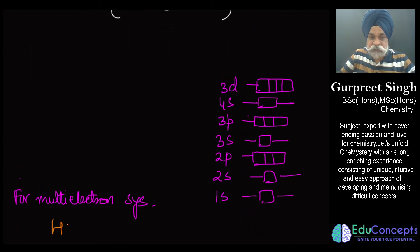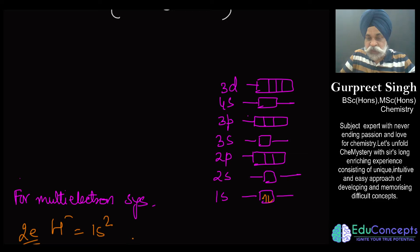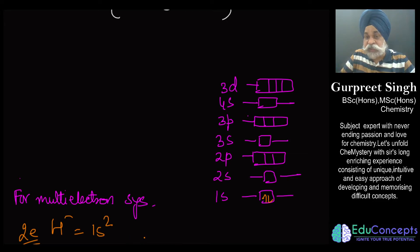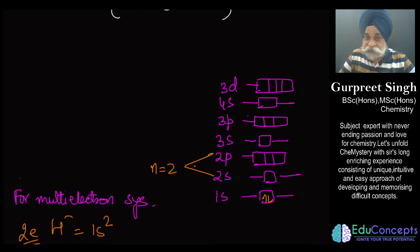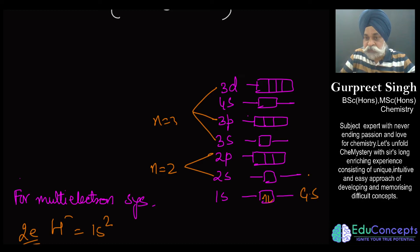However, this would not be the case in a multi-electron system. H⁻ itself has two electrons and its configuration is 1s². In this case, the two electrons are attracted by the nucleus but also repel each other. As a consequence, in n=2 and n=3, the sub-shells now have different energies.